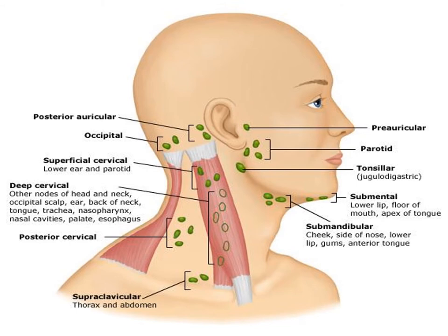For the cervical lymph nodes, we have two main groups: the transverse and longitudinal. The transverse group starts from the submental lymph node, then the submandibular, tonsillar or jugulodigastric, the parotid, the preauricular, the postauricular, and we have the occipital lymph node.